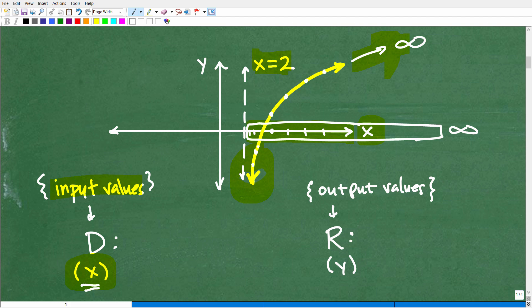But remember, this function, this graph here is never going to touch the line X equals 2. All right, so what is a way we can describe this?